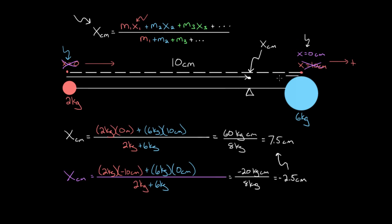It's 2.5 centimeters to the left, which, lo and behold, is exactly at the same point, since this was 7.5, and this is negative 2.5, and the whole thing is 10 centimeters. It gives you the exact same location for the center of mass, it has to.